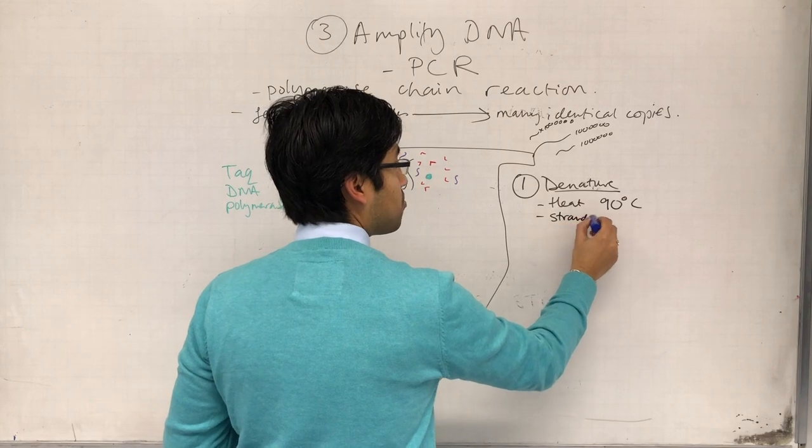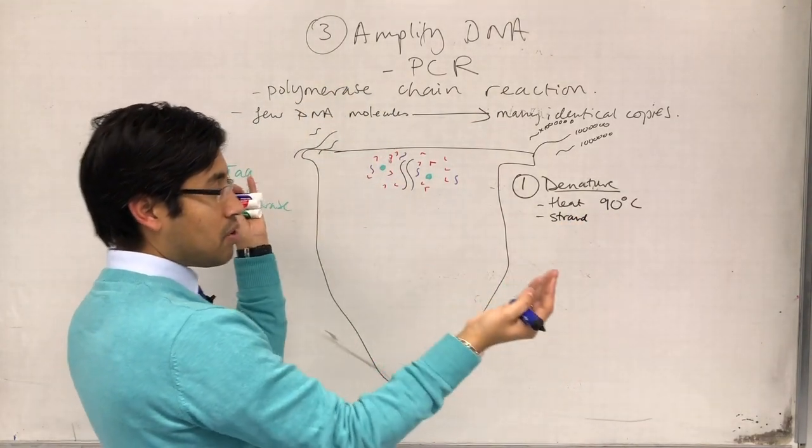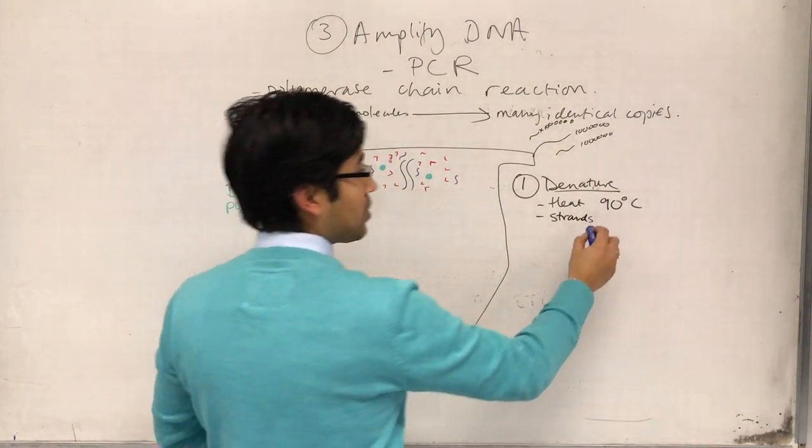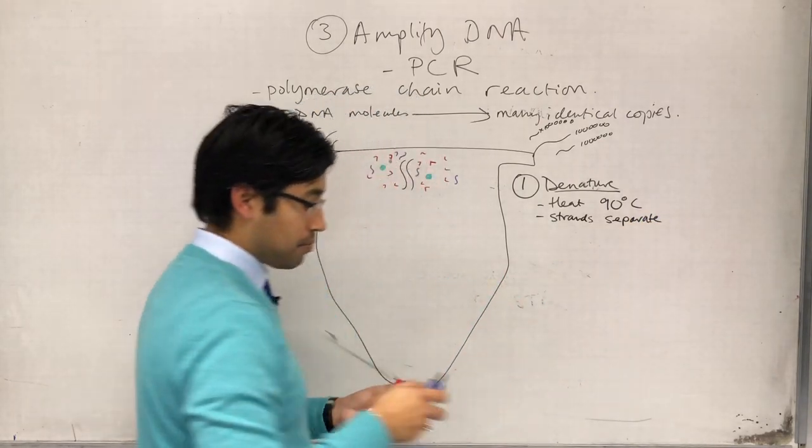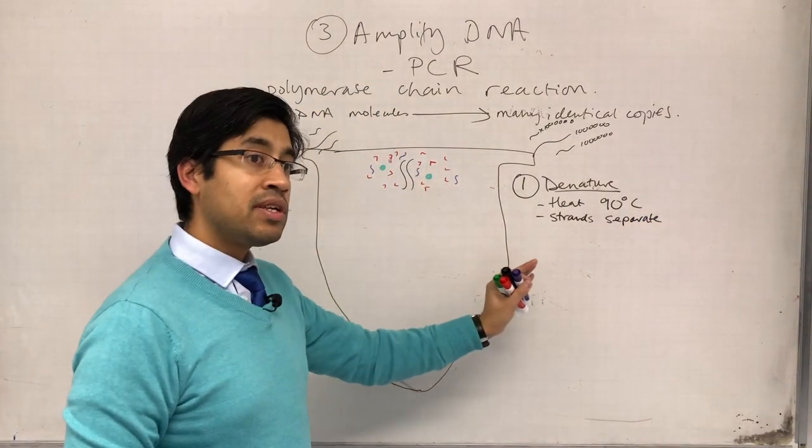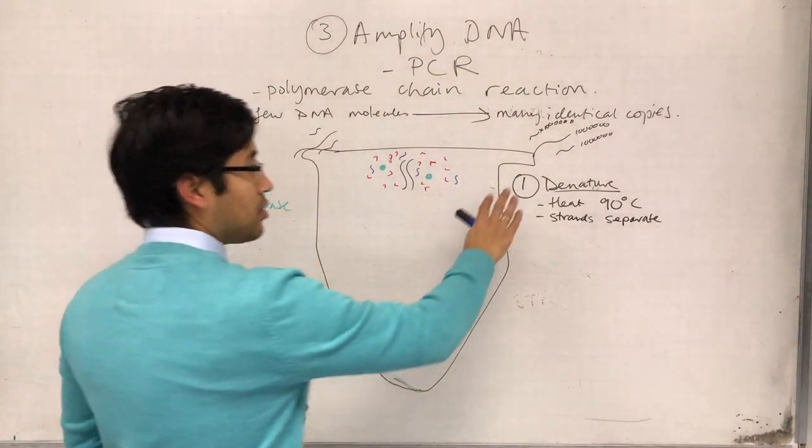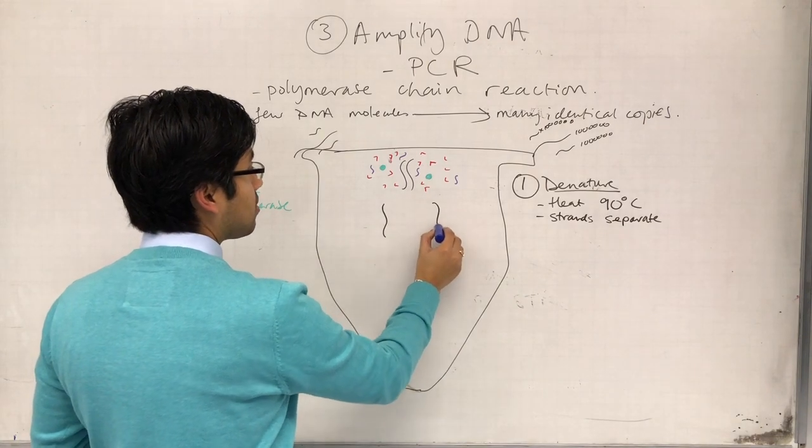And what this does is it causes the DNA strands to separate from each other. Okay, so hydrogen bonds break, complementary base pairing separates, and the strands, the whole entire strands separate from each other. So, the strands separate, and so, we are now in this situation.